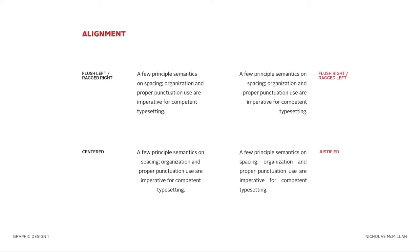Next we have justified. Justified is a go-to alignment for designers who are just beginning. You have these nice clean lines on both the left and the right. But there are inherent problems in justified text that take more precision to properly set. What happens with justified text is there are giant spaces in between words because it's trying to figure out how many characters you can fit on each line. To set justified text correctly, you have to go in and kern each word to close those spaces because they are interruptions for the eye. Generally, I ask my students to stay away from justified text and learn how to set flush left text.